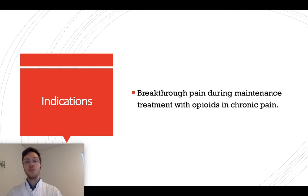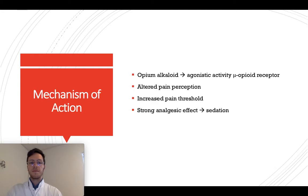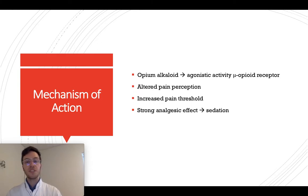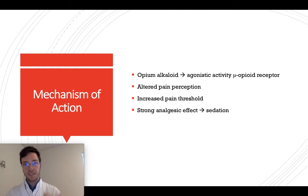What is the indication to use fentanyl? It's used for breakthrough pain — as an extra painkiller which works short-term in patients who have severe chronic pain and already have a maintenance pain treatment. Fentanyl is an opium alkaloid with agonistic activity on the mu opioid receptor. When it binds to this receptor in your brain, it reduces pain perception and increases the pain threshold, resulting in a strong analgesic and sedative effect.